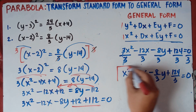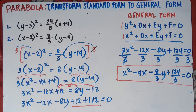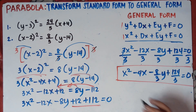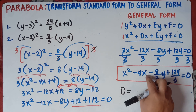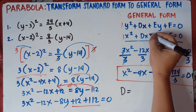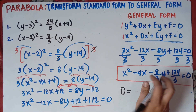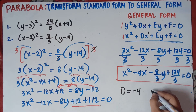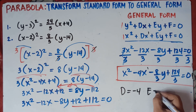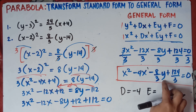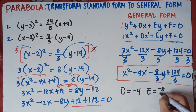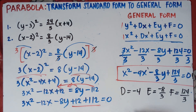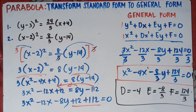From the general form x² + dx + ey + f = 0, we identify the values: D is the coefficient beside x with exponent 1, so D = −4. E is the coefficient beside y, so E = −8/3. And F = 124/3. That's the complete answer for number 2.